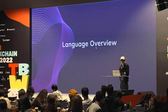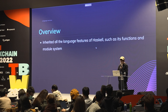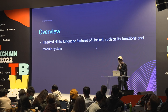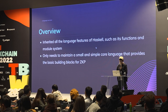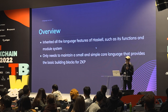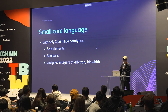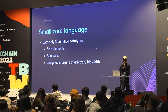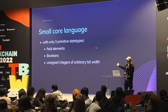Let's look at some examples of Keylong. Since Keylong is embedded in Haskell, it has all of Haskell's features such as functions and module system, so we only have to maintain a small and simple core language. Keylong has three primitive data types: field elements (basically just numbers), booleans, and unsigned integers.